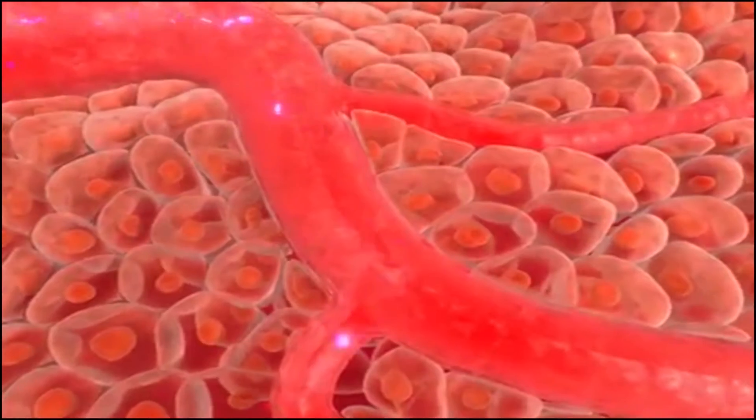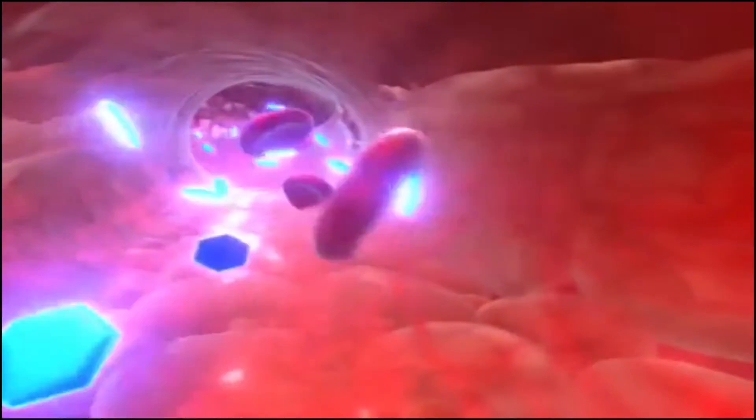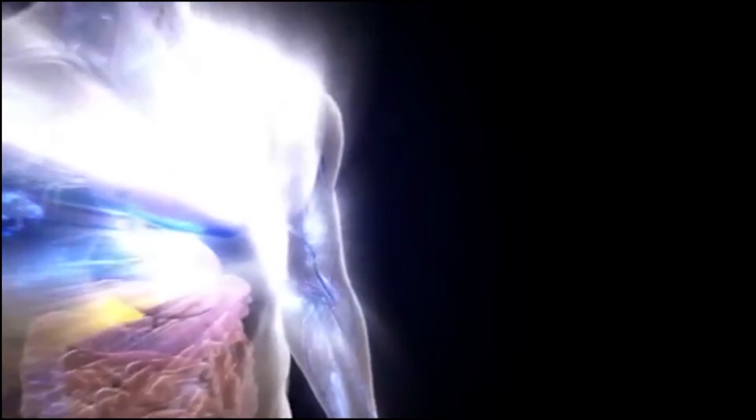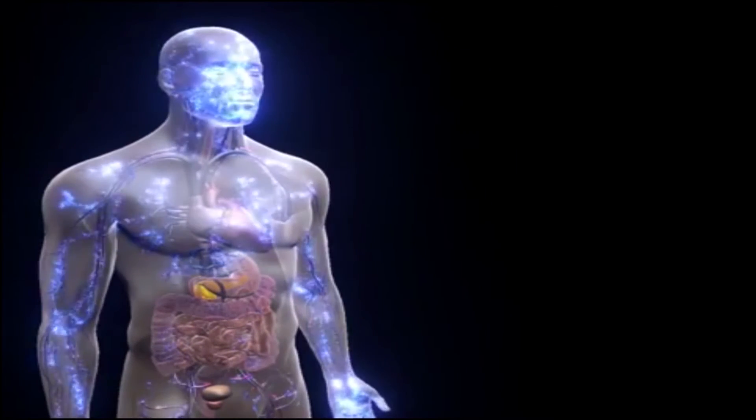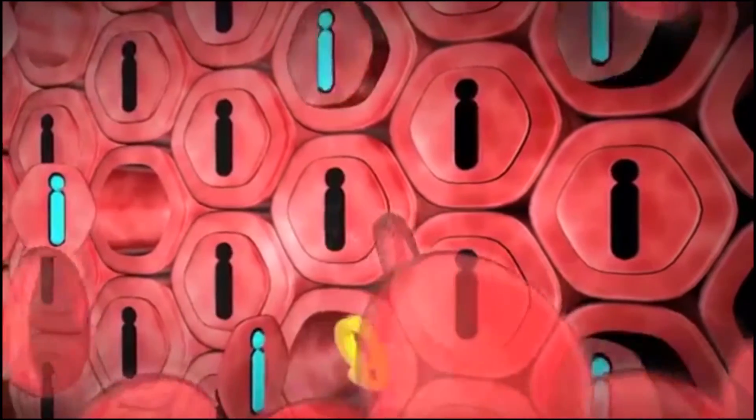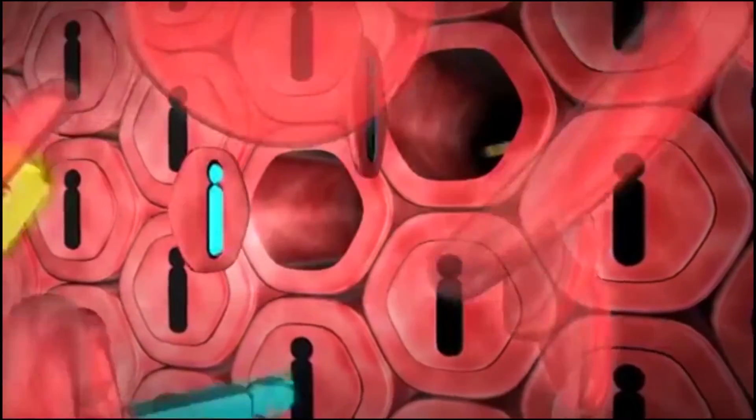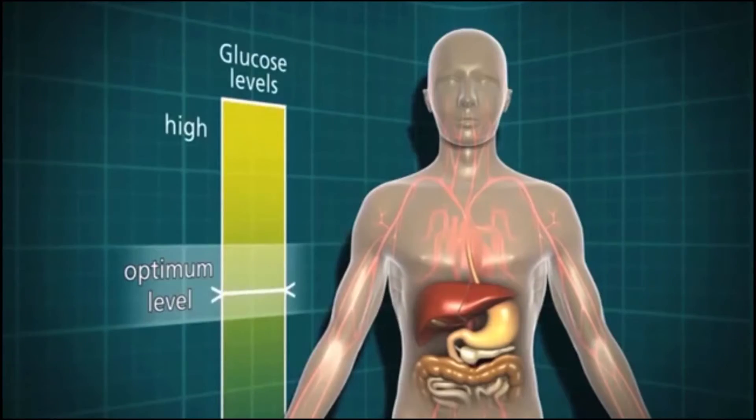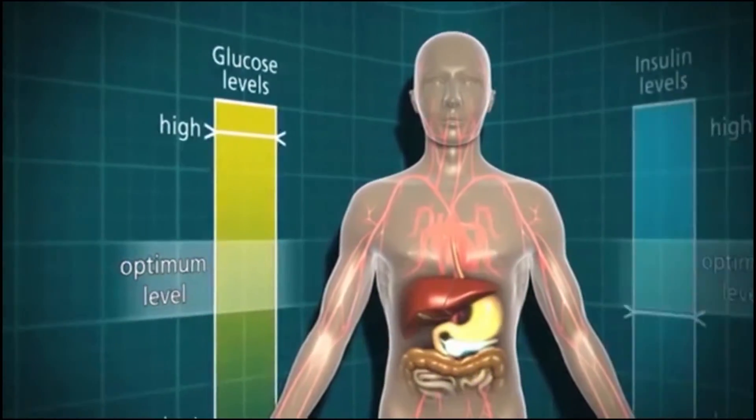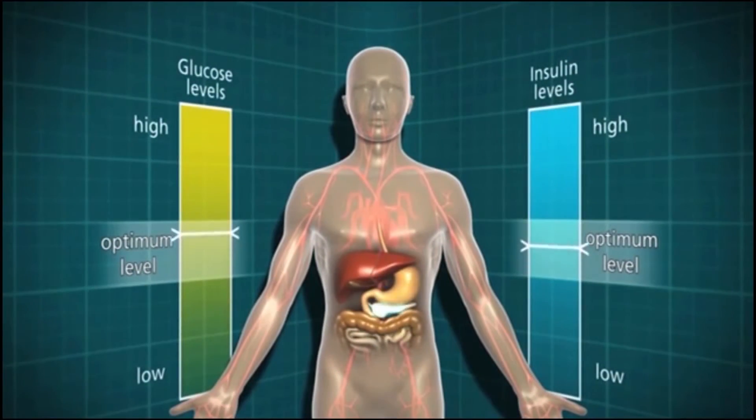Glucose acts as the main source of energy for cells in the body. Insulin helps the cells to absorb glucose from the blood and convert it to energy. The liver, pancreas and the food consumed are responsible for the glucose and insulin levels in the body. The blood glucose level should be maintained at an optimum level for normal functioning of the body.